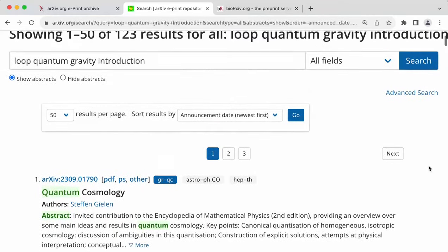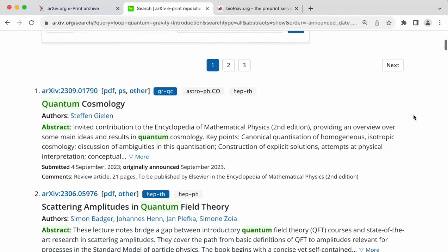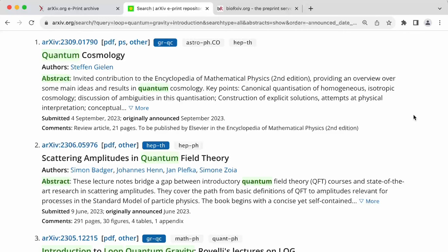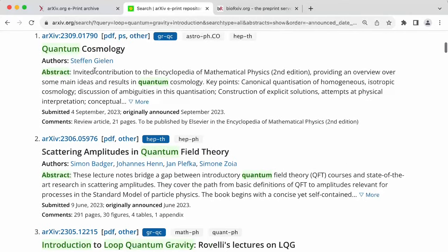And now, it often happens that when you are searching, you see something which is not related to what you were searching for. For instance, I'm looking for an introduction to loop quantum gravity. So the first paper is on quantum cosmology, and that's great.